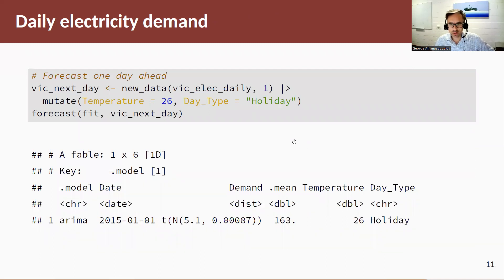Okay, let's try and forecast now. Again, we're going to use the new_data and I'm going to forecast seven days, 14 days ahead. Actually, this is one day ahead here. I'm just giving an example of what the Fable object will look like. So I'm passing a temperature of 26 and it returns a mean value of 163 for electricity demand.